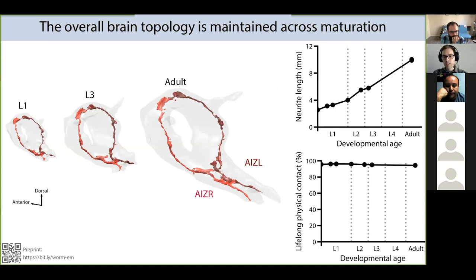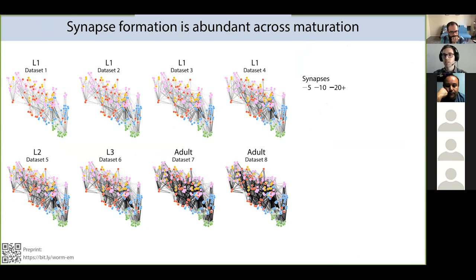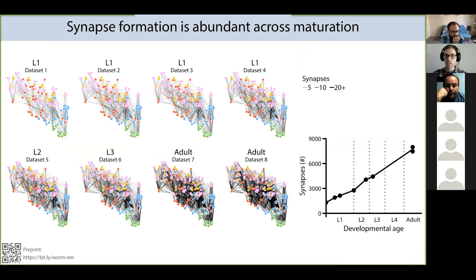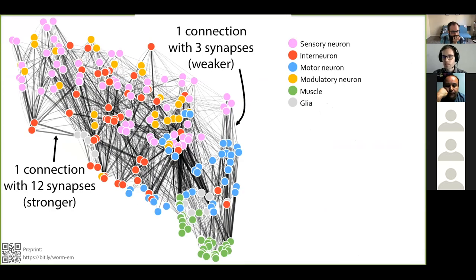There are a few exceptions: some neurons grow new minor branches, and many neurons grow tiny spine-like protrusions. But the overall shape and relative size of neurons in the brain is maintained. In parallel to neurite growth, there is extensive formation of synapses from L1 to adult. If we plot connectomes as graphs — where each circle represents a cell and each line represents synapses between cells — from L1 to adult the total synapse number increases almost sixfold.